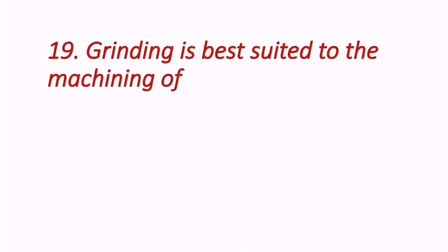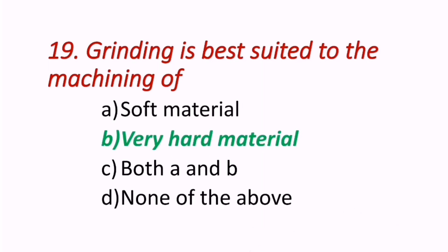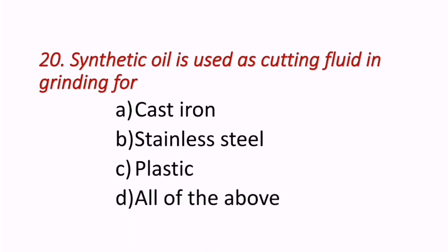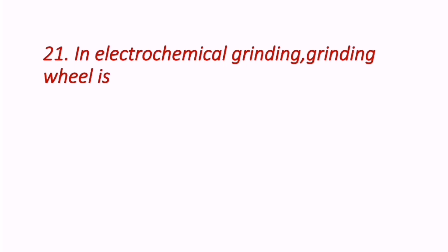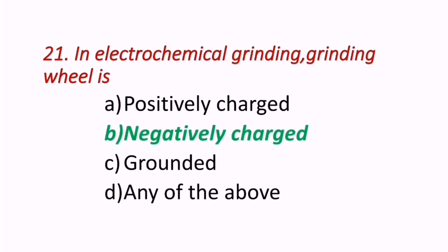Nineteenth question: Grinding is best suited to the machining of? The correct answer is B — very hard materials. Twentieth question: Synthetic oil is used as cutting fluid in grinding for which materials? The correct answer is all of the above — cast iron, stainless steel, and plastic. Twenty-first question: In electrochemical grinding, the grinding wheel is? The correct answer is B — negatively charged.